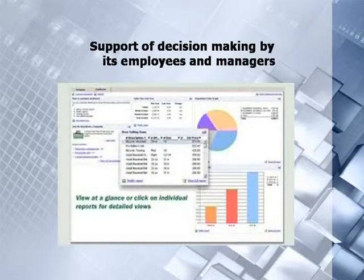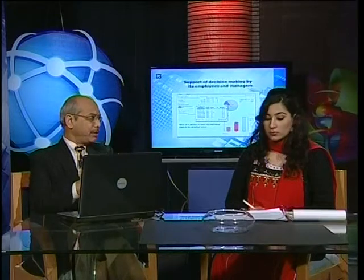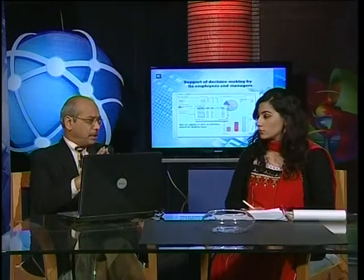The second role is support of decision making by employees and managers. In decision making, you can get a graphical view of the inventory level of a particular item, so that you can order it before you run out. The system indicates itself that you are running out of a particular item.